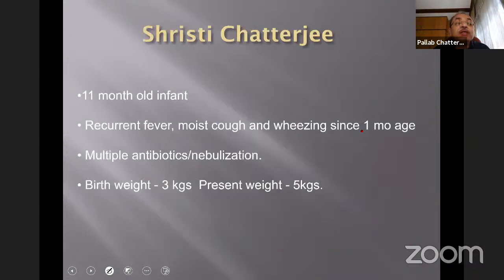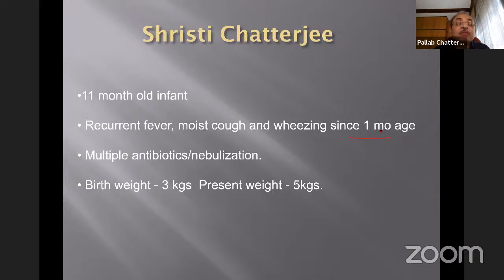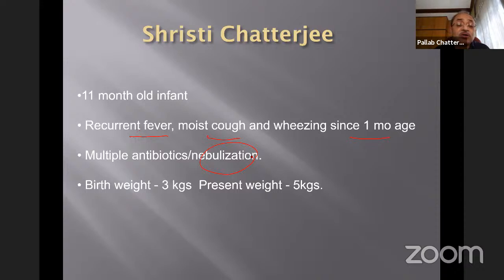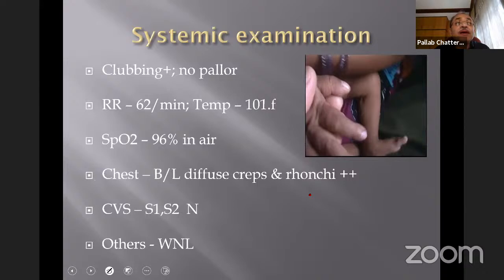Now an 11-month-old infant presenting with recurrent fever, moist cough, and wheezing since very early age — this cannot be asthma. Wheezing from one month of age with moist cough is a red flag. A child with asthma will not have moist cough. There is no weight gain at all — at 11 months, the child weighs around 5 kg, birth weight was 3 kg. There is clubbing — another red flag. Tachypnea, fever, and bilateral diffuse crepitations and ronchi. Multiple different lobes have had infections. We are dealing with recurrent pneumonias in different lobes — with hyponatremia, hypokalemia, and hypoproteinemia.